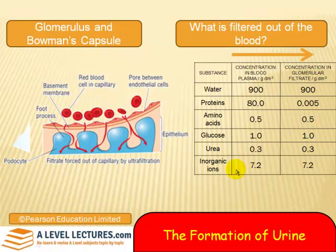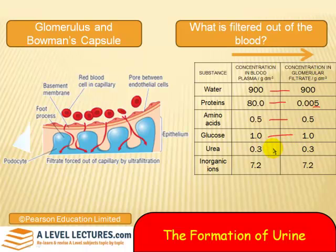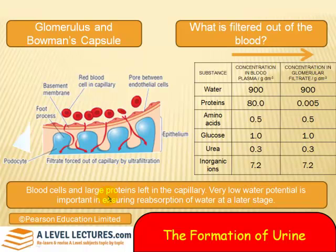When blood is filtered from the glomerulus into Bowman's capsule, all of the water is filtered through. Proteins: very little — only 0.005 — only the smallest proteins with molecular weights less than 69,000. All amino acids, all glucose, all urea, and all inorganic ions are filtered through. Blood cells and large proteins are left in the capillary. The very low water potential of the blood leaving via the efferent arteriole is important for ensuring reabsorption of water at a later stage.